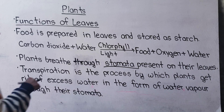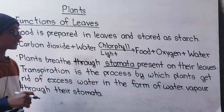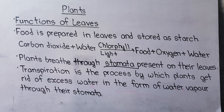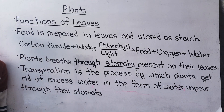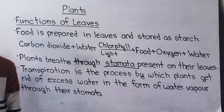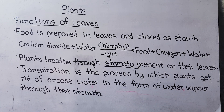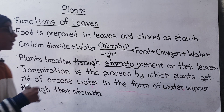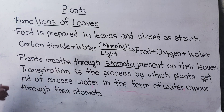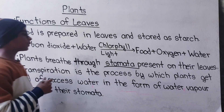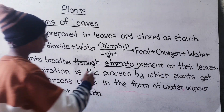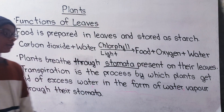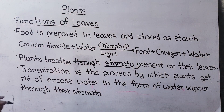So to recap: food is prepared in leaves and stored as starch. Carbon dioxide, water, chlorophyll, and light produce food, and water and oxygen are also released. Plants breathe through stomata present on their leaves — stomata being the plural form of stoma.